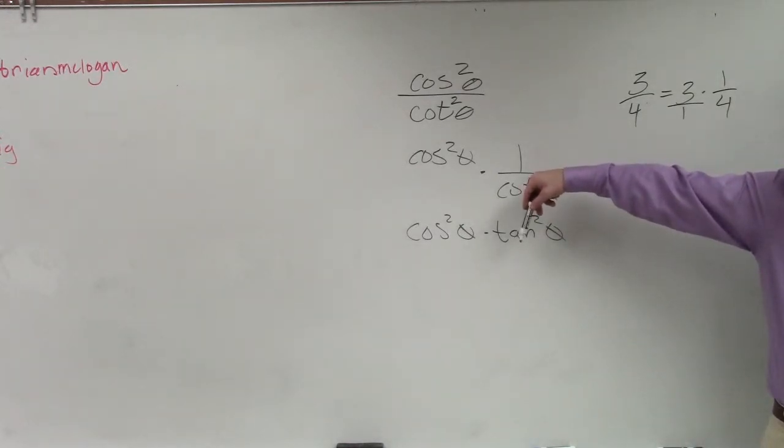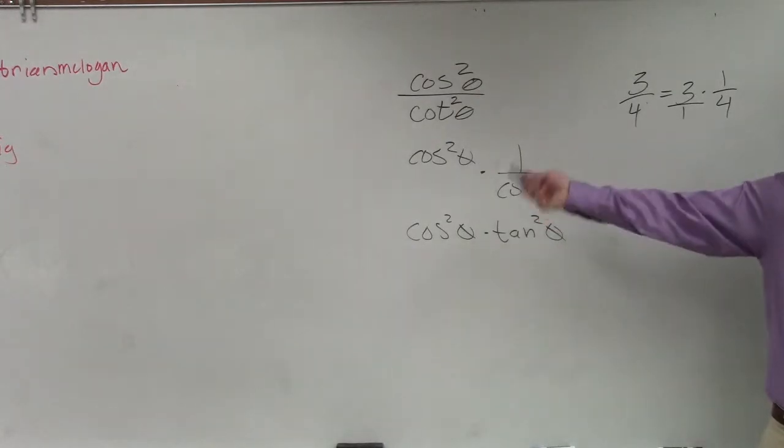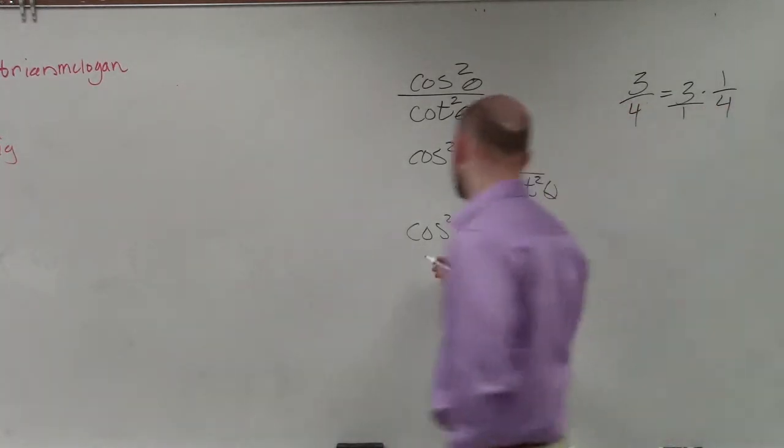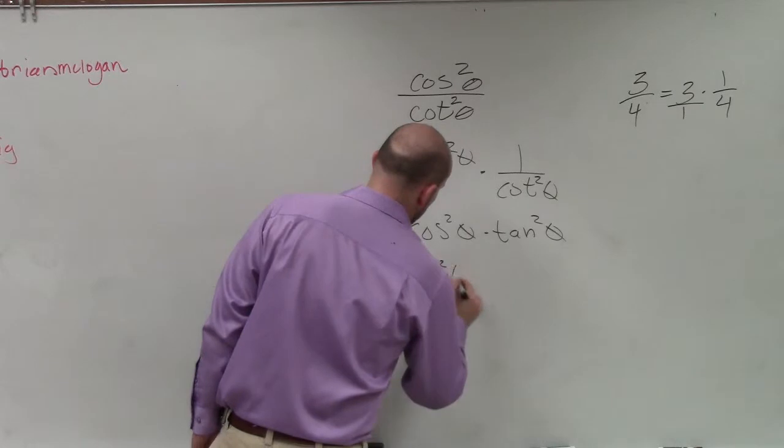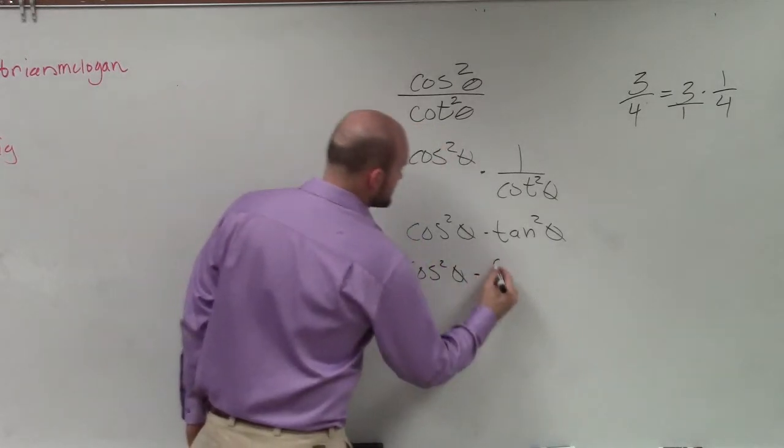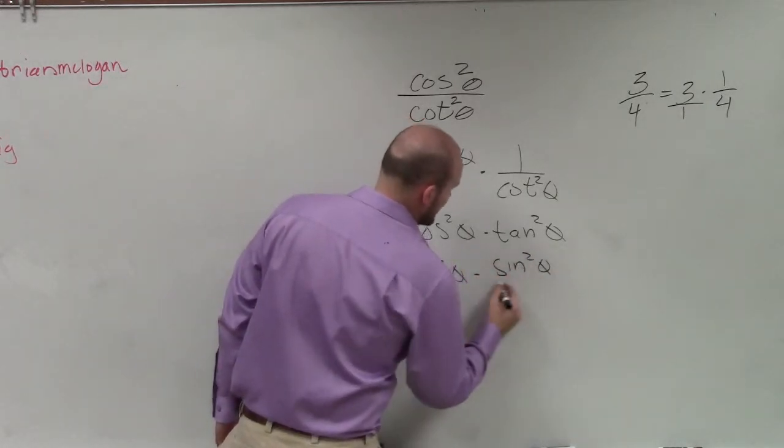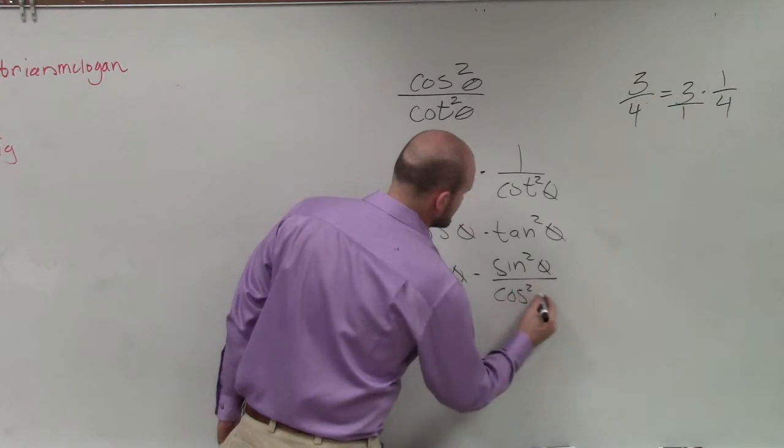I understand that I can rewrite tangent squared of theta as sine over cosine squared. So I can write cosine squared of theta times sine squared of theta over cosine squared of theta.